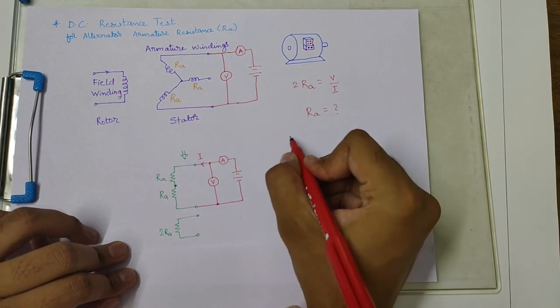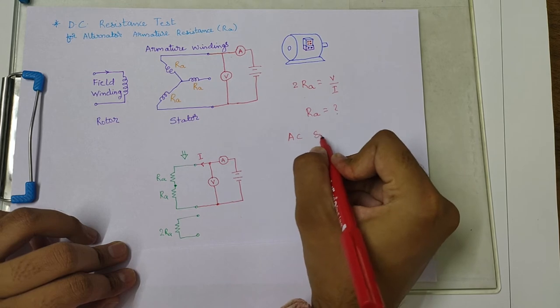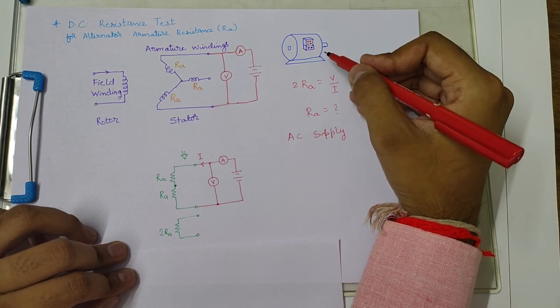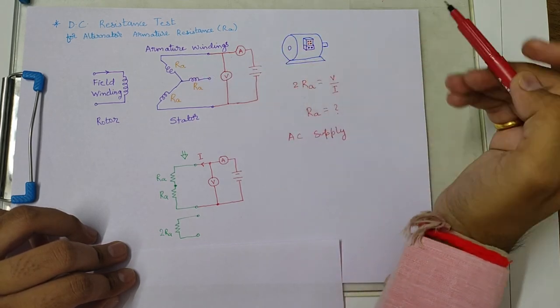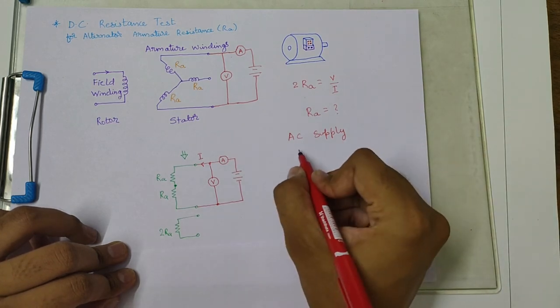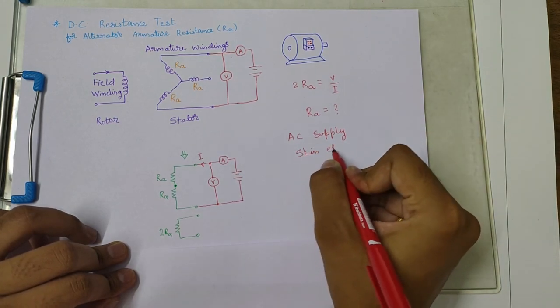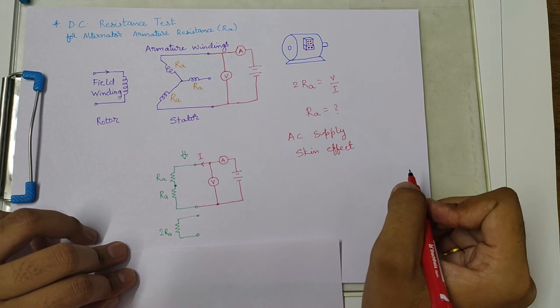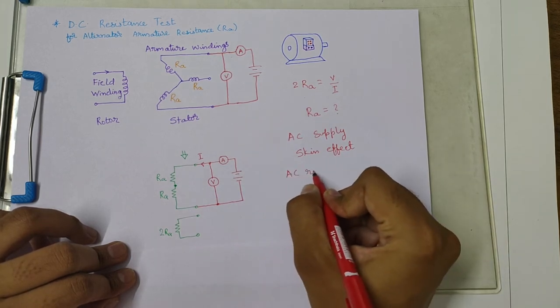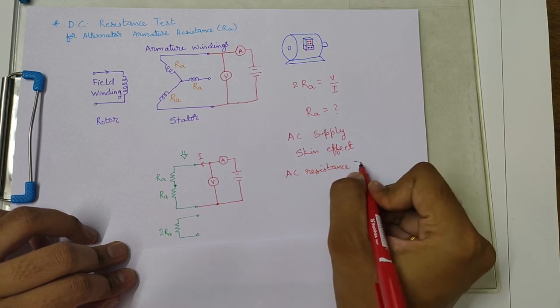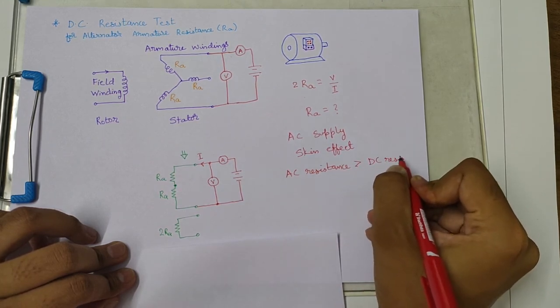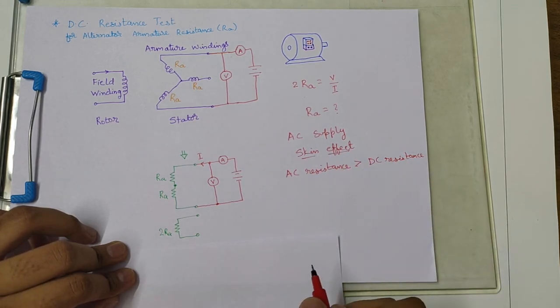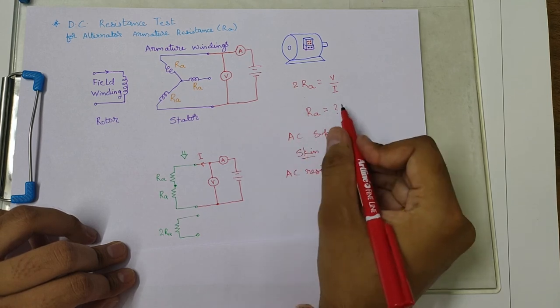Now it is important to note here that this is a DC resistance test. When we give AC supply to the alternator, when this alternator will be generating alternating current, alternating current will be flowing through the windings, and so the resistance in AC condition changes because of the skin effect. So AC resistance is always greater than DC resistance because of skin effect.